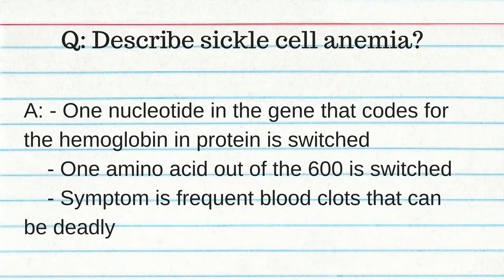A mutation is a change in the genetic sequence of a gene or an entire chromosome. A genetic mutation is a change in the nucleotide sequence. Two examples of gene mutations: point mutation and frameshift mutation. A point mutation is caused by a base substitution and may or may not affect one amino acid in the protein. A frameshift mutation is caused by insertion or deletion of a nucleotide and results in many amino acids being changed. Sickle cell anemia: one nucleotide in the gene coding for hemoglobin is switched; one amino acid out of 600 is changed, causing frequent blood clots that can be deadly.